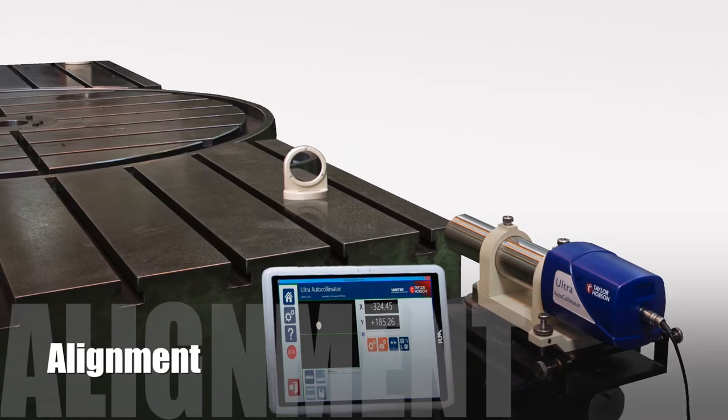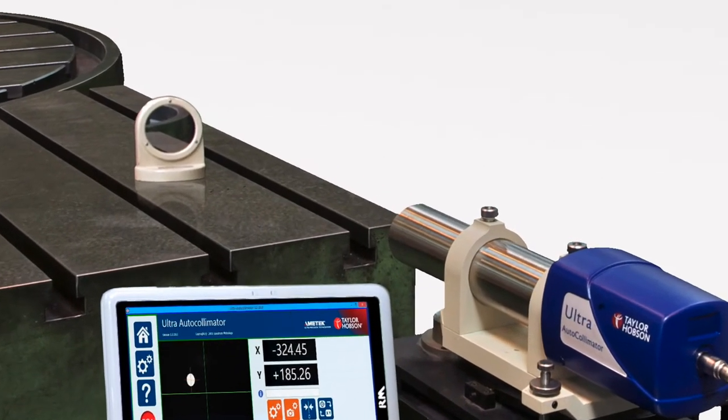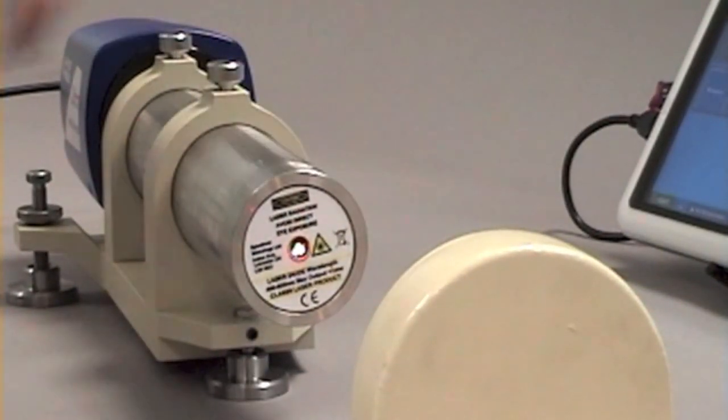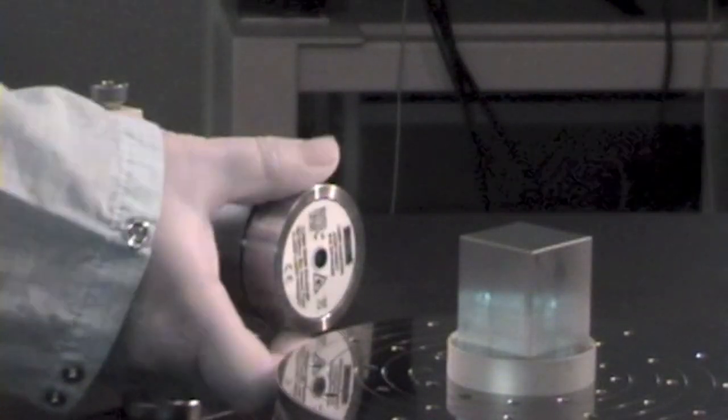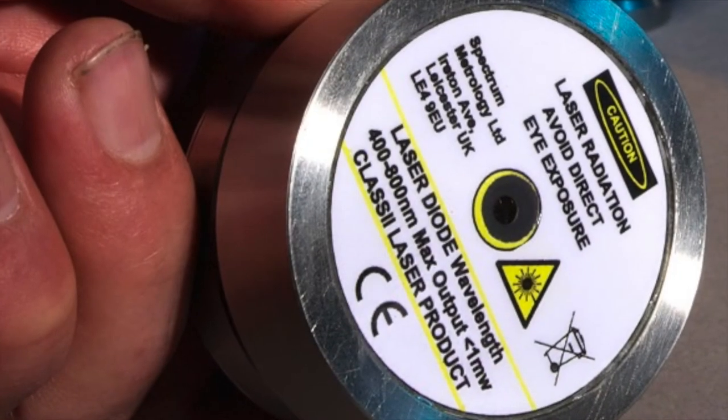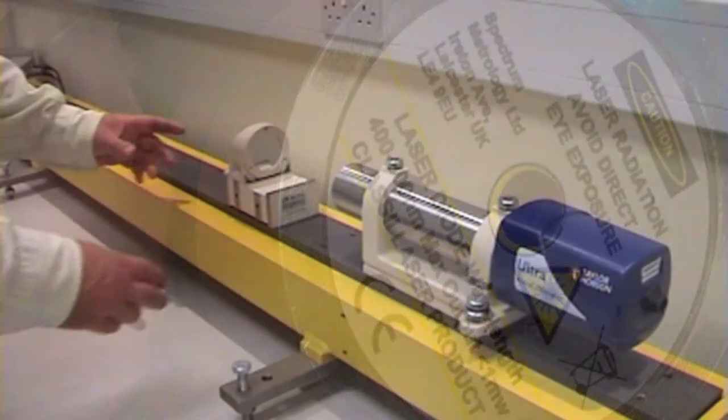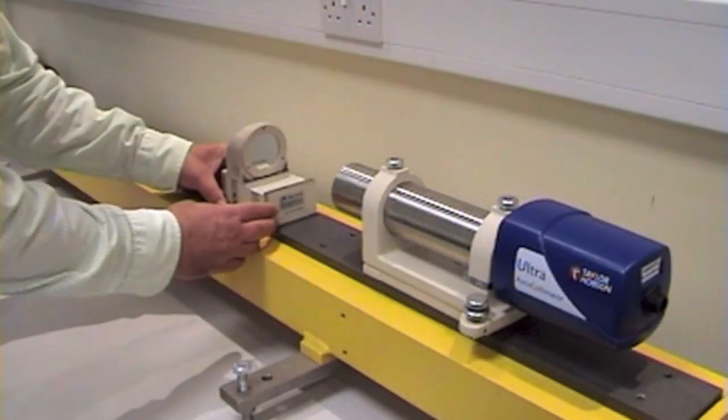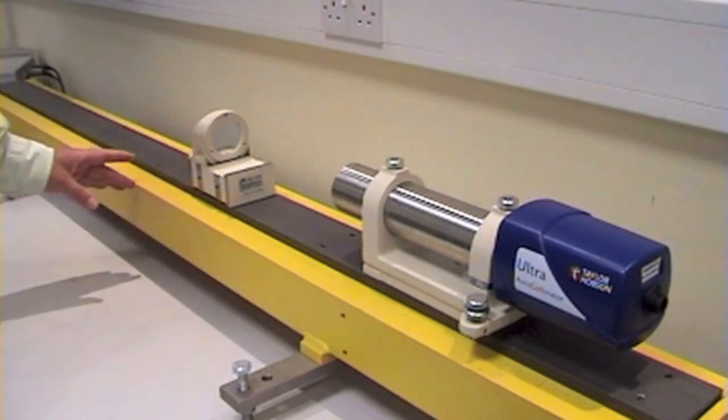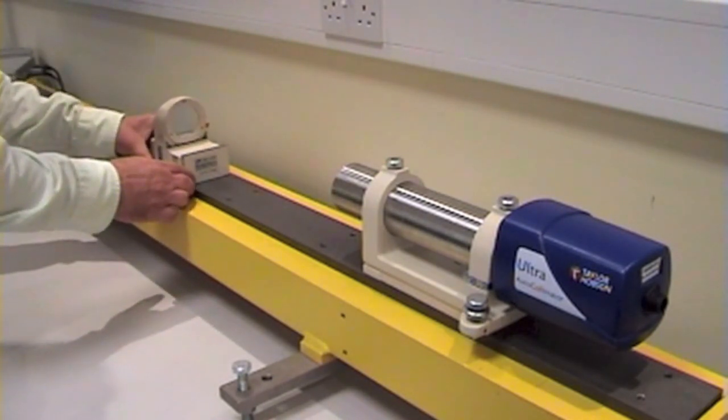Alignment: what we need to make sure is that the autocollimator is pointing at the centre of the mirror. This is easily done by using the laser sighting aid which is provided as standard with the instrument. And what we then do is we move the mirror from the front to the back of the rail and then back to the front again and make sure we have a signal all the way along the length of the rail.